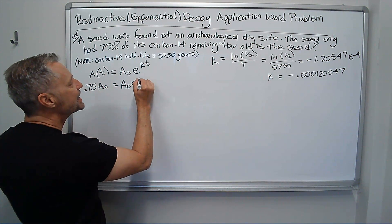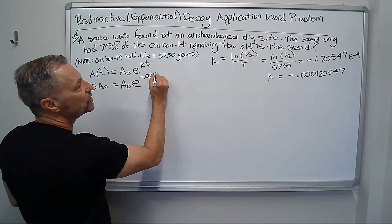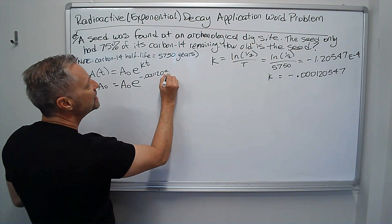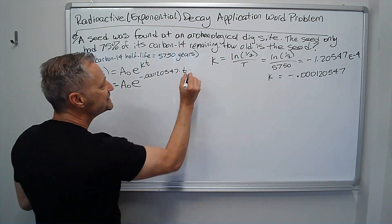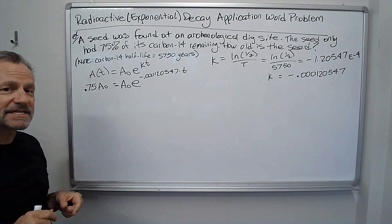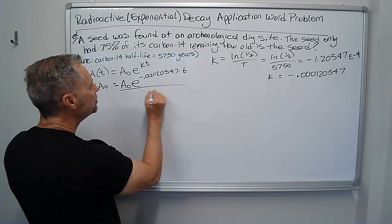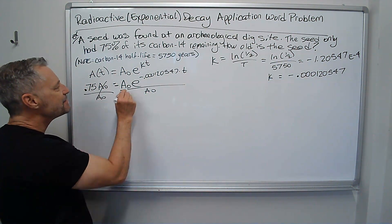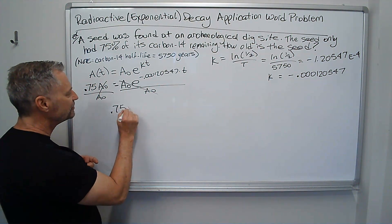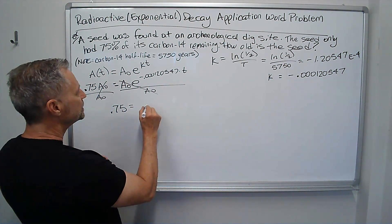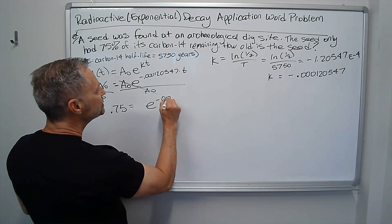And then e to the k, negative 0.000120547, and there's more stuff there I just left out, times t. I'm trying to solve that for t. So I divide both sides by A sub 0, and notice that goes away. It didn't matter what A sub 0 started with. So now I just have 0.75 equals e to the negative 0.00012047t.